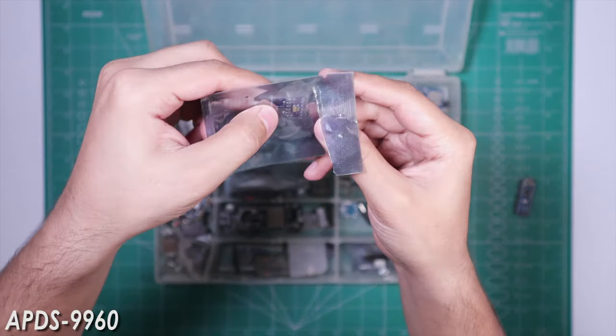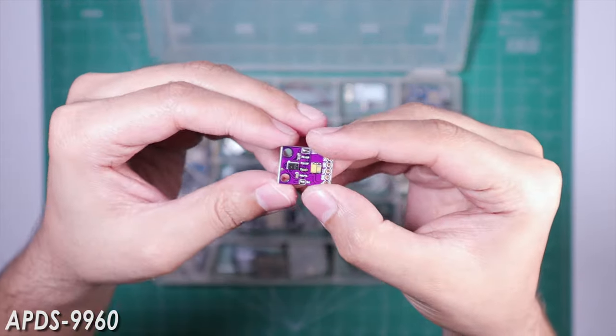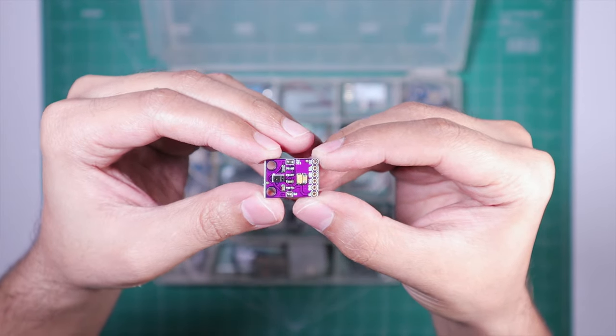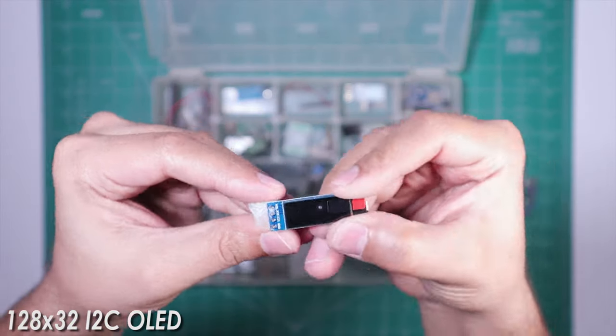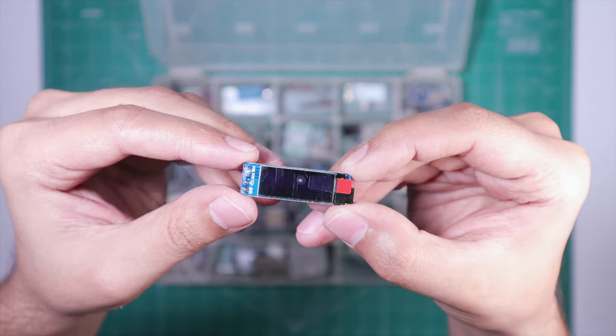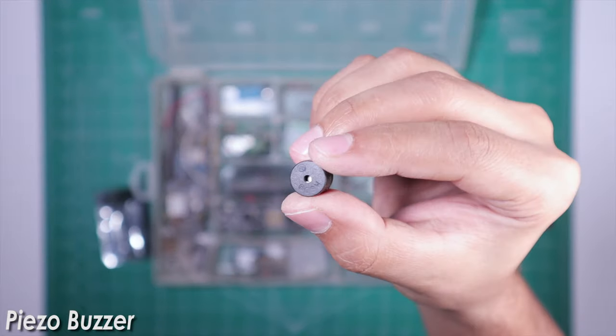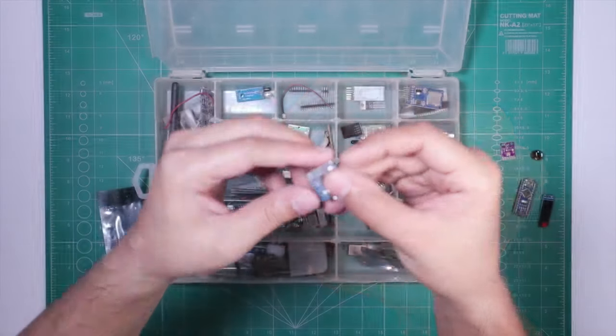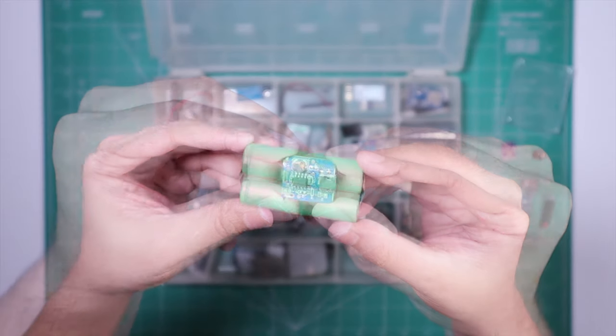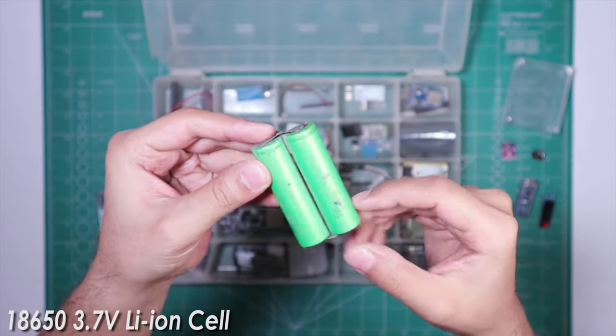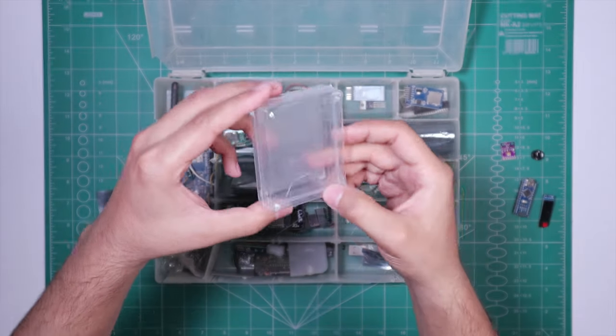APDS 9960 proximity sensor, 128 by 32 pixels OLED display, a piezo buzzer, TP 4056 battery charging module, and an 18650 lithium cell.